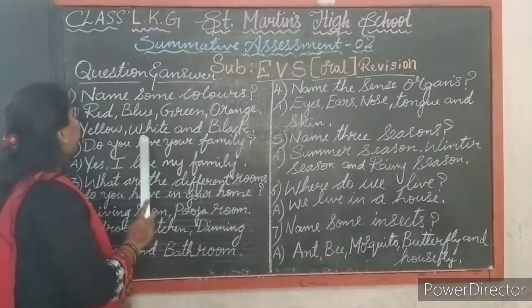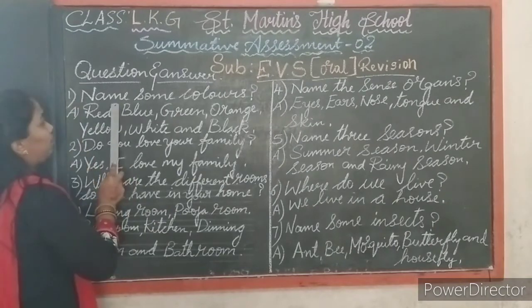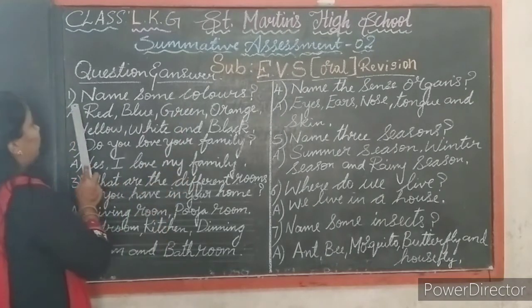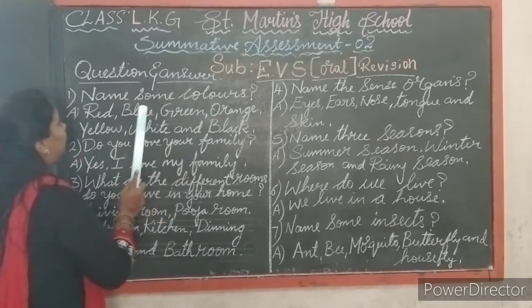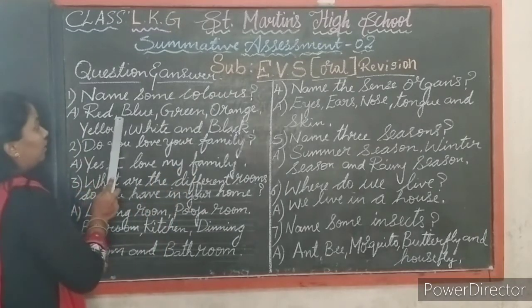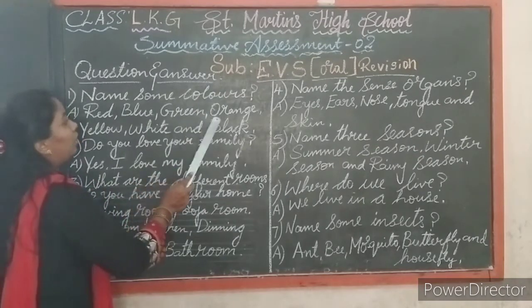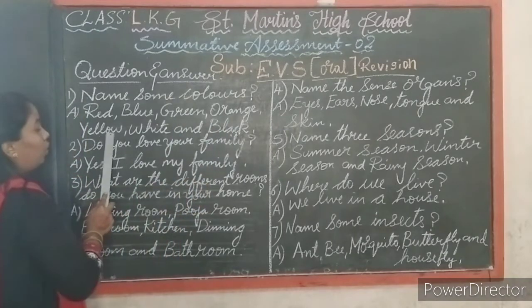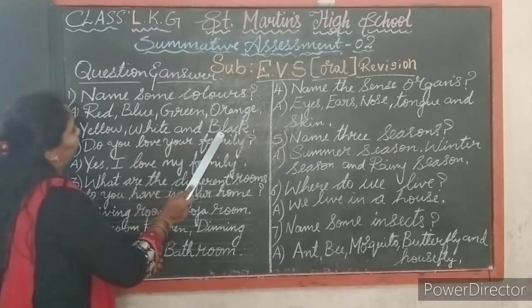The first question: name some colors. Answer — red, blue, green, orange, yellow, white and black.